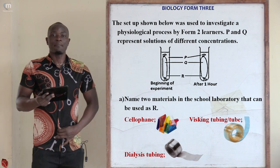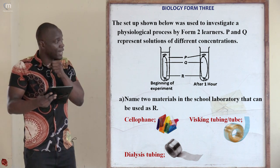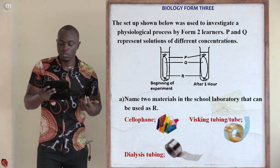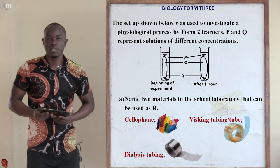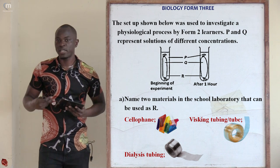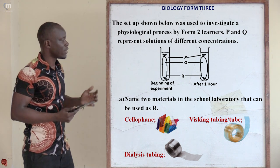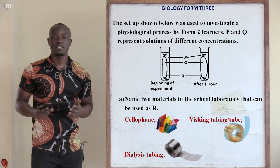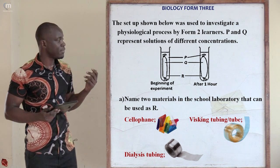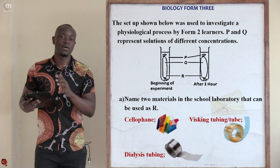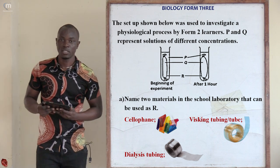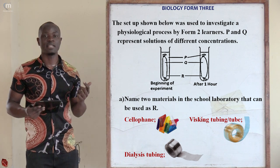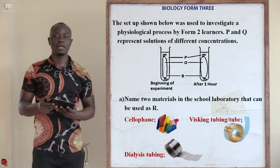Question number nine has a diagram. The setup was used to investigate a physiological process. P and Q represent solutions of different concentrations. At the beginning of the experiment the apparatus is slim, but after one hour it has grown in size and swollen. The liquid inside the boiling tube is labeled P, and the liquid inside apparatus R is labeled Q.